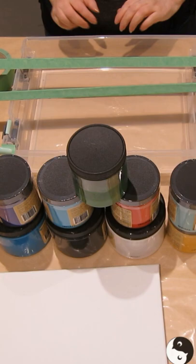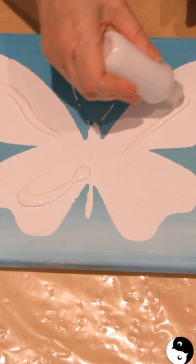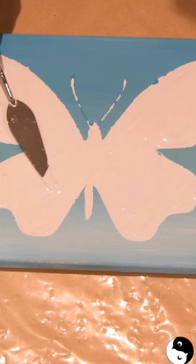I'm going to start with a base layer of white. I'm just going to spread some onto the canvas and spread it around, making sure there are no dry areas here.